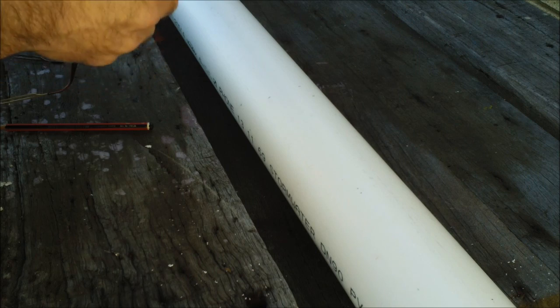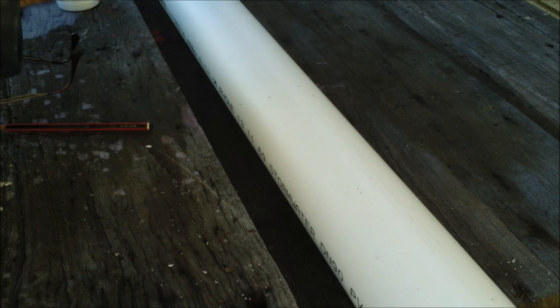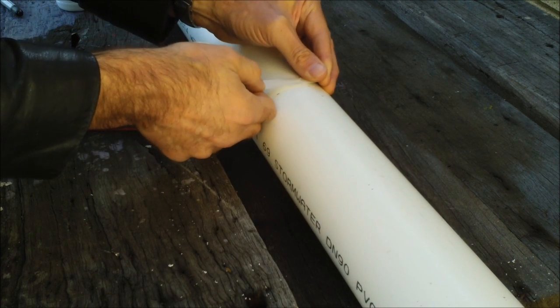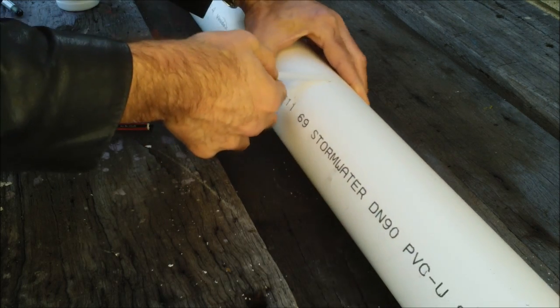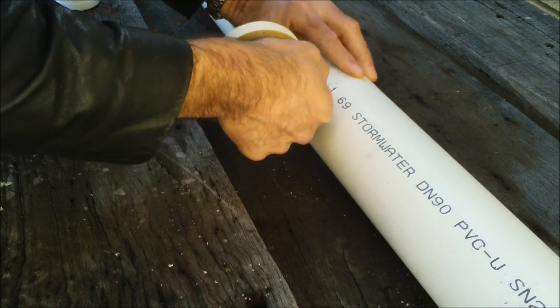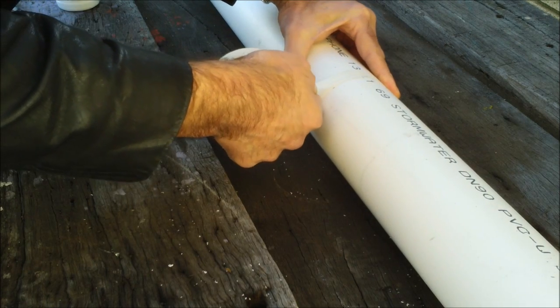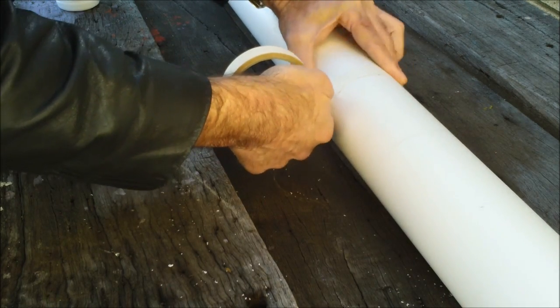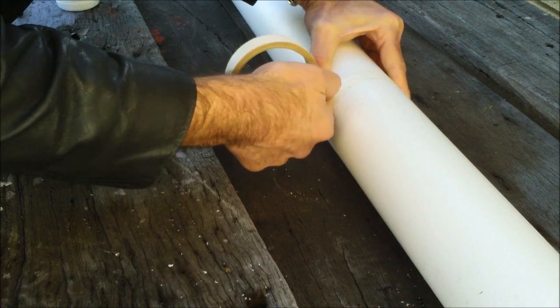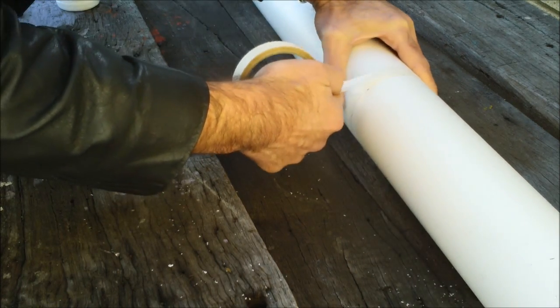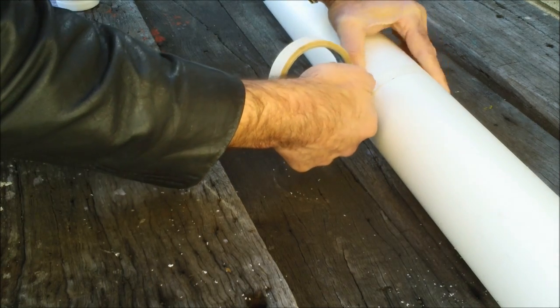Now to make it easy to see where to cut, I'm going to run a line of this masking tape along the pencil marks. This is the easiest way I know to get a really square cut apart from using a drop saw or something like that. There we go.